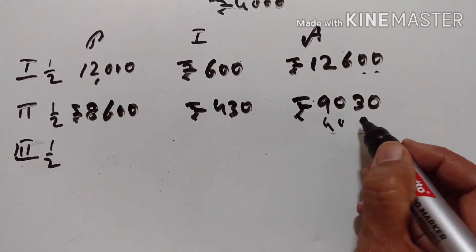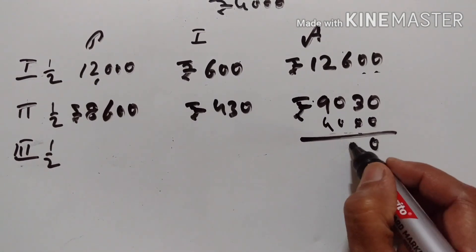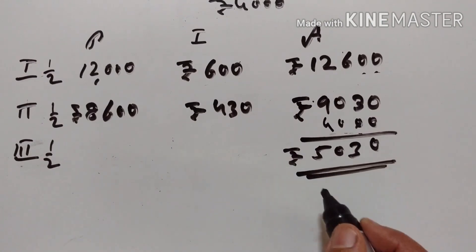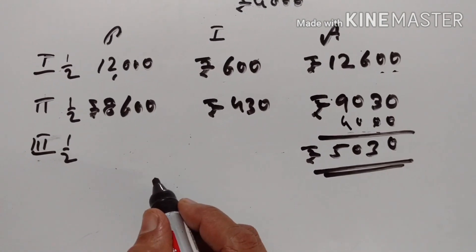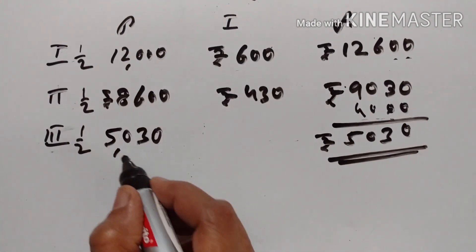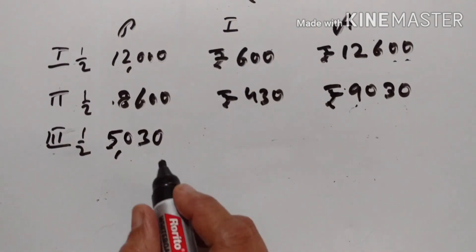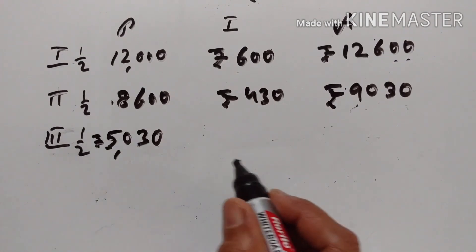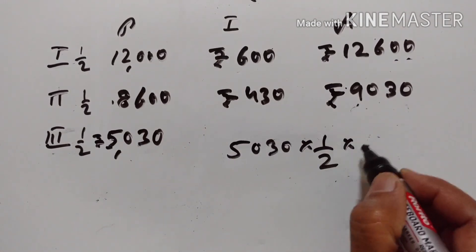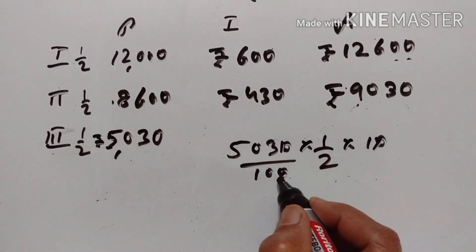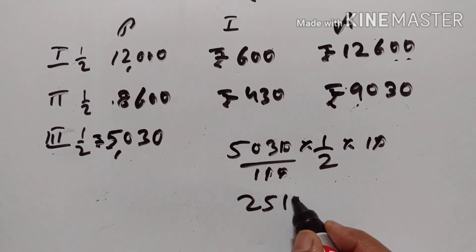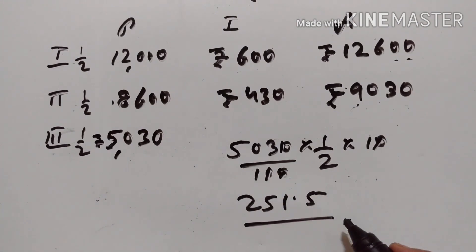Again, she pays back Rs. 4,000. What remains is Rs. 5,030. That becomes the principal for the third 6 months. The interest for Rs. 5,030 is equal to 5030 times 10 divided by 100. Working through: 2×2=4, 2×5=10, 2×1=2, 2×1; the interest is Rs. 251.50.